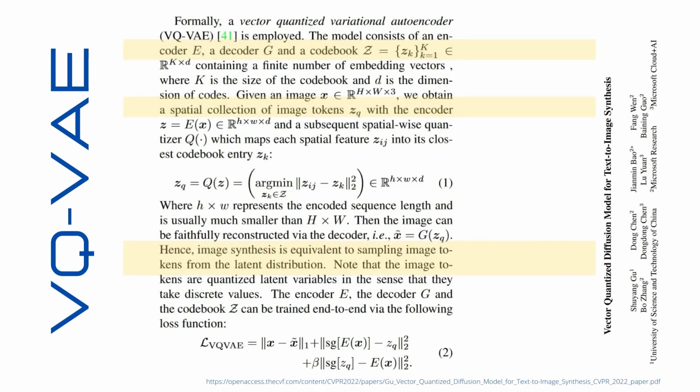From 2022, there is a beautiful publication you see here: Vector Quantized Diffusion Model for Text-to-Image Synthesis. It has a very nice summary of our VQ-VAE, and I've included a short excerpt. At the bottom you have the HTTP link — have a look at this PDF. It is highly interesting, and it shows you the mathematical details including the loss function for the vector quantized variational autoencoder.